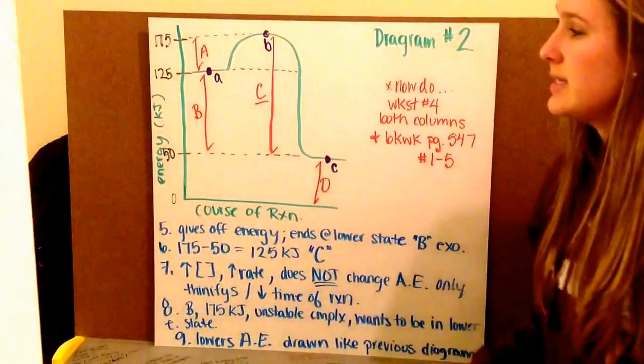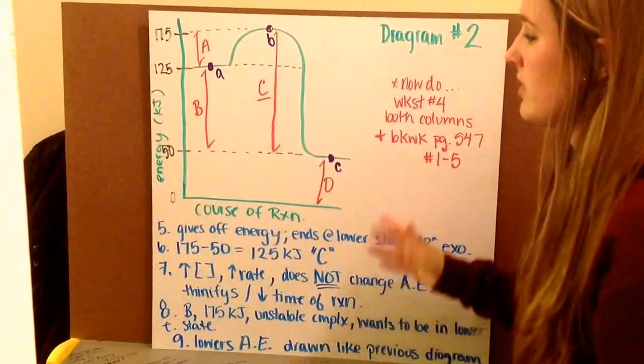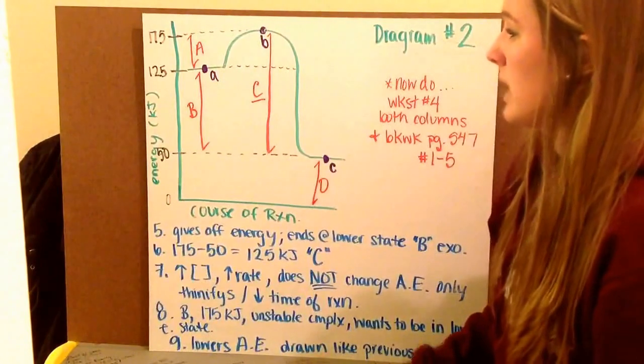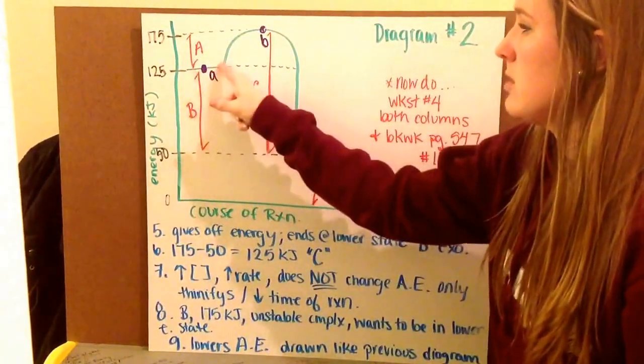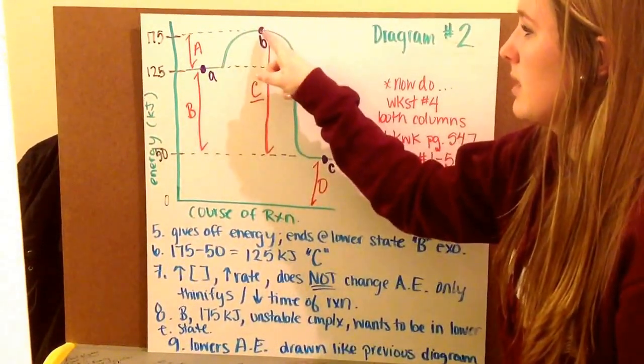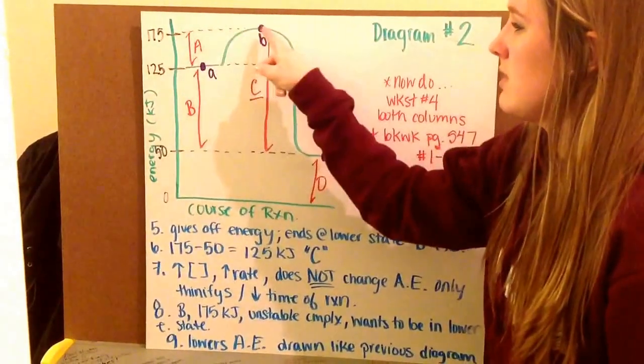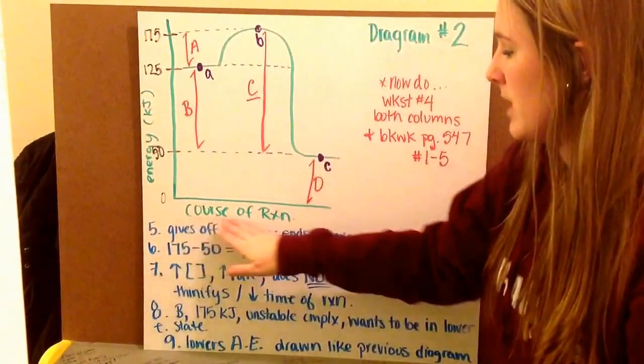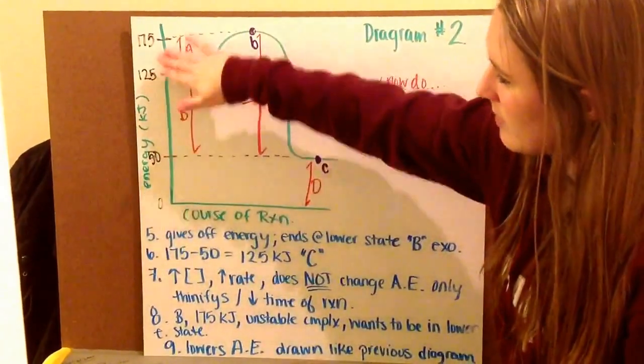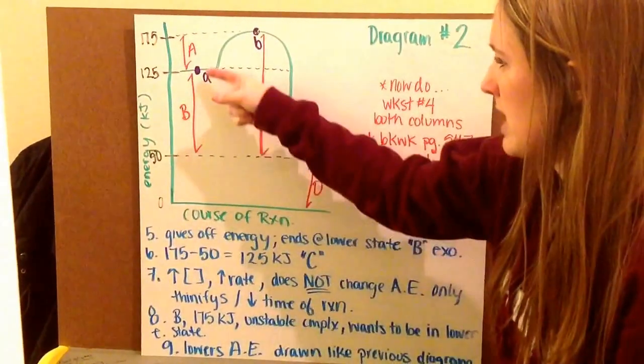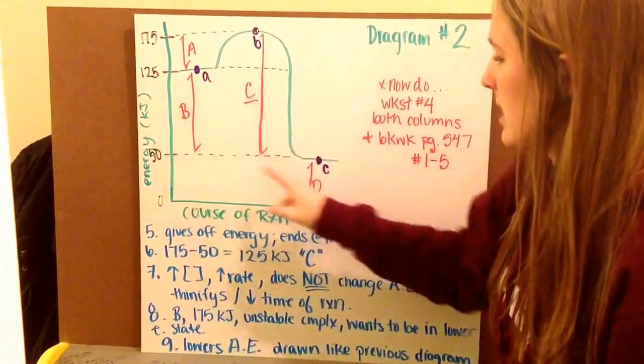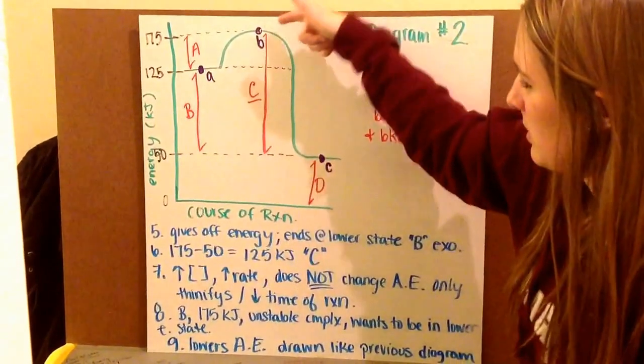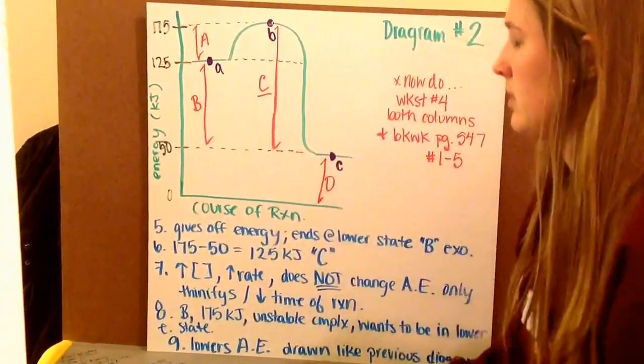Okay, this is diagram number two. We want to first take a look at what is my diagram telling us. I want to locate its starting here. I have my peak up at about 175 kilojoules, ending down at about 50 kilojoules. My course of reaction, my energy. I notice I have a change in my reactants to my products, my reactants to the peak, and the difference between the peak and my products.